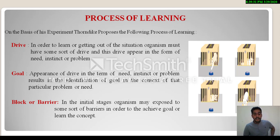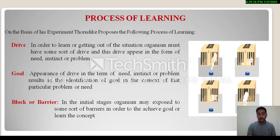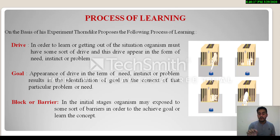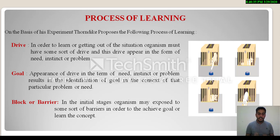Third point is block or barrier. In the initial stages, the organism may be exposed to some sort of barriers in order to achieve a goal or learn the concept. When Thorndike placed food outside the cage, the cat wanted to eat it, but there was a barrier — the cat could not eat the food until it opened the door from inside. Whenever an individual is in a learning situation and needs to achieve a goal, they must break down certain barriers.